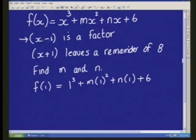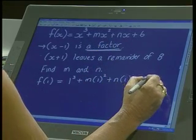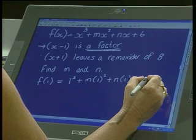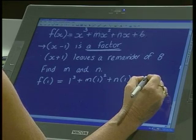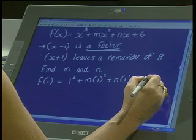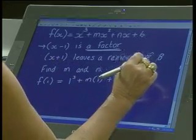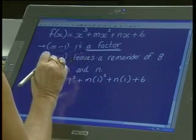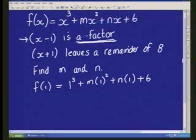Okay. Now, the minute they tell you x minus 1 is your linear factor, you know you're going to substitute 1. But what is the critical piece of information if they tell you it's a factor? What can you set this equal to when it's a factor? It's equal to 8. Okay, but this one is equal to 8, it leaves a remainder of 8.